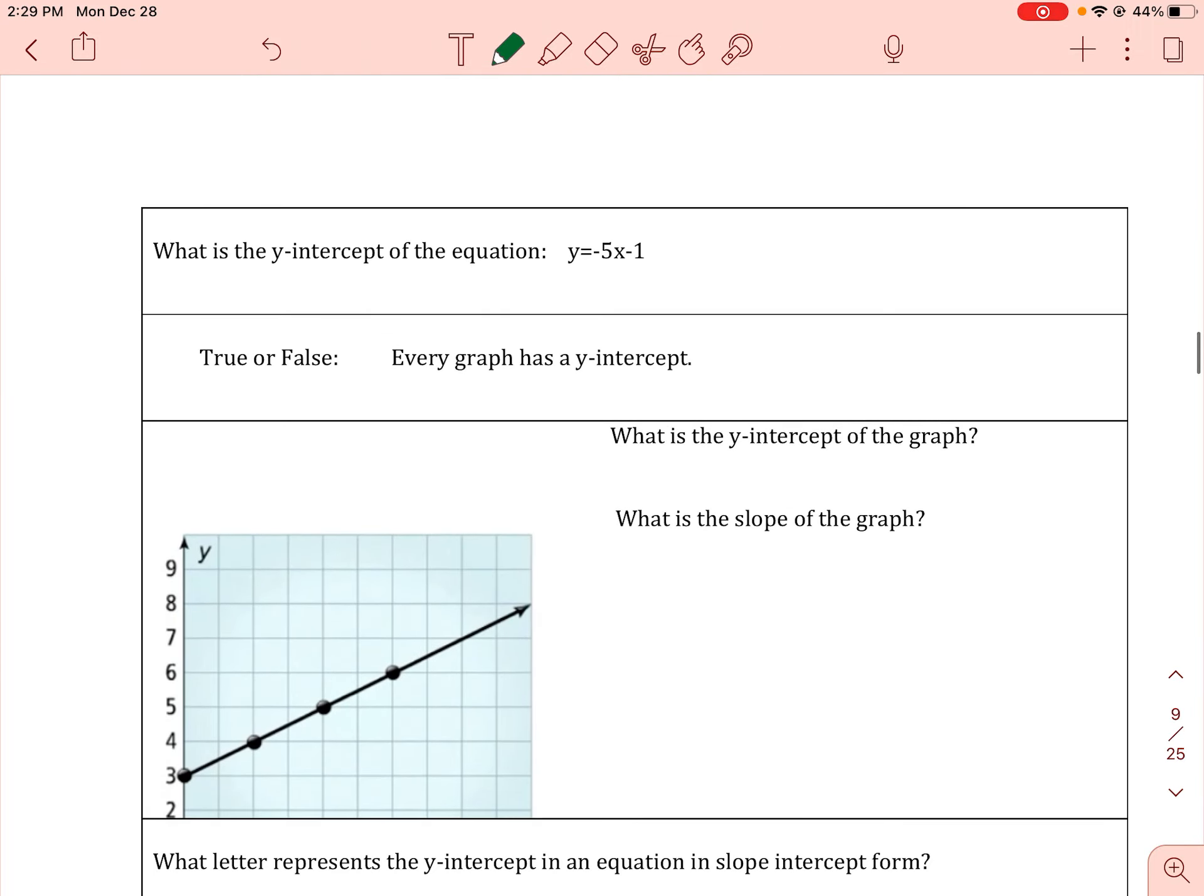What is the y-intercept of the equation? Again, the coefficient of x, that's our slope. We want to find our y-intercept or our b, which comes after the x and is negative 1.